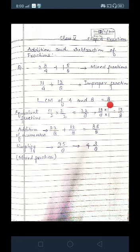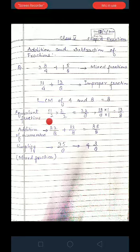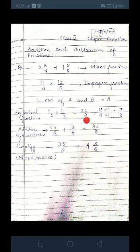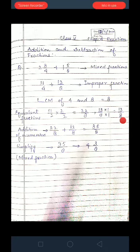Next step is to find out the equivalent fraction with the LCM. Means you have to make the denominator of both the fractions as 8. So after multiplication you get 22 by 8 and 13 by 8.